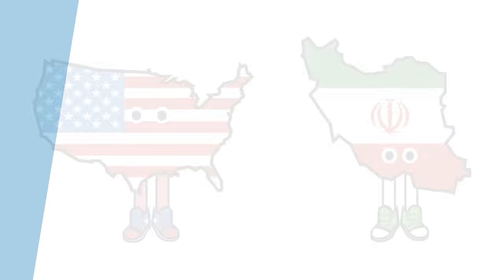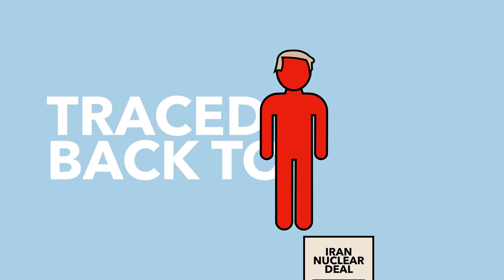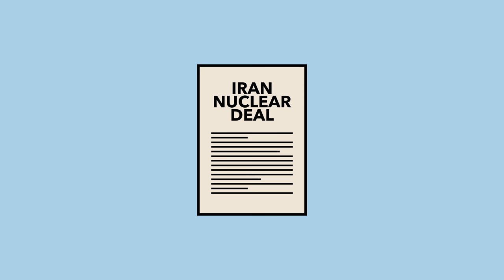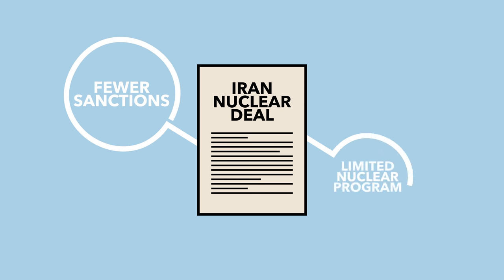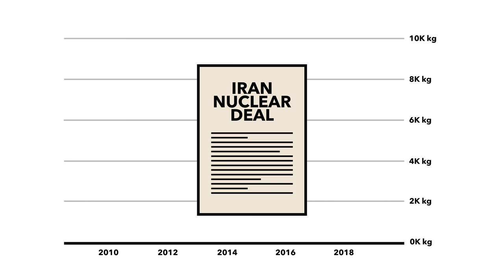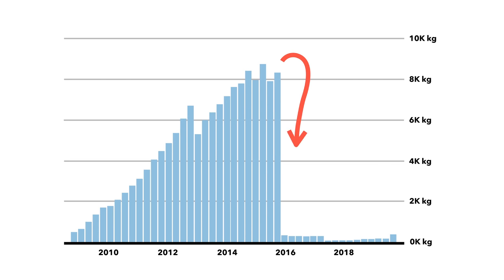A lot of this can be traced back to Trump pulling out of the Iran nuclear deal. This deal removed sanctions from Iran in return for them limiting their nuclear program. To many, this compromise was a great success, and the official data shows that Iran's stockpiles were greatly reduced as a result of the deal.